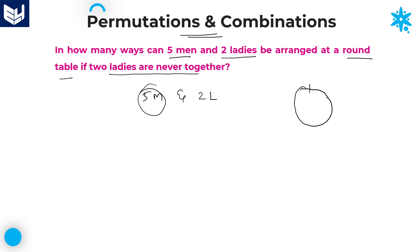First, arrange the 5 men on a circle. That is 4 factorial ways. Why? Because if you are arranging n persons on a circle, that is (n−1) factorial. Here n = 5, so 5−1 = 4 factorial ways. These are the 5 men, and they can be arranged in 4 factorial ways.